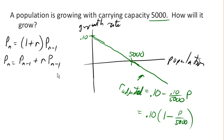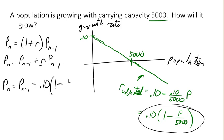So now if we go ahead and take this and replace R in the equation with our adjusted growth rate, we get this. P N equals P N minus 1 plus. Our growth rate now is gonna be 0.10 times 1 minus P N minus 1. We're replacing the P here with P N minus 1 because that is the current population, right? So all of this was that R times P N minus 1.